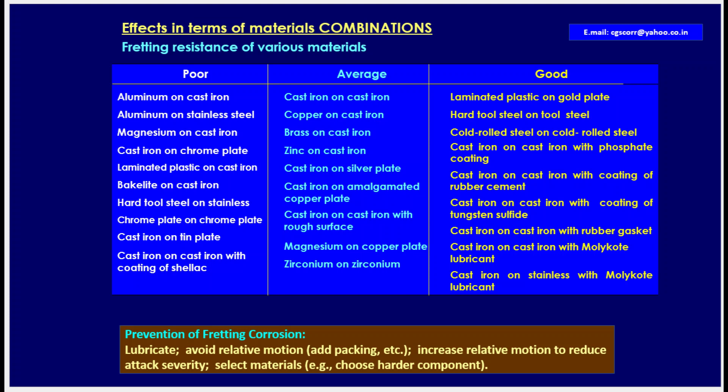Materials with average fretting resistance include: cast iron on cast iron, copper on cast iron, brass on cast iron, zinc on cast iron, cast iron on silver plate, cast iron on amalgamated copper plate, cast iron on cast iron with rough surface, magnesium on copper plate, and zirconium on zirconium.